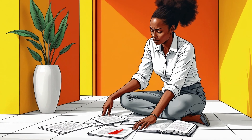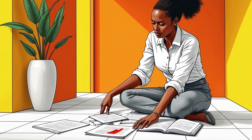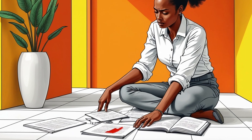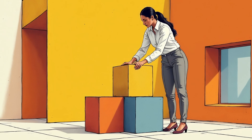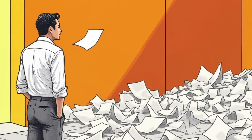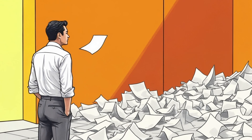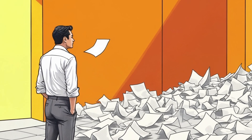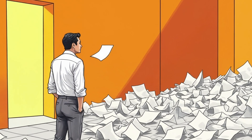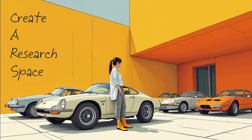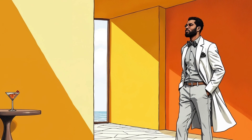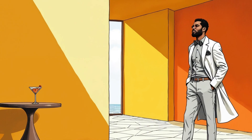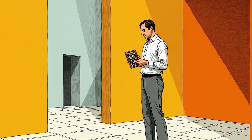Your abstract, more than any other element of your research paper, determines whether your work will be published, or even read at all. Yet most academics default to the same predictable structure: we did this, then this, then found this. This formulaic approach not only bores journal editors and reviewers, but can actively work against your paper being selected from the thousands crossing their desks each month. The CARS method, which stands for Create a Research Space, offers a more sophisticated alternative that frames your research as a strategic intervention in ongoing scholarly discourse rather than just another incremental addition to the literature.